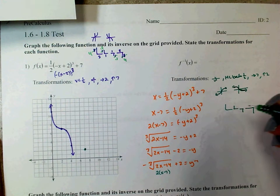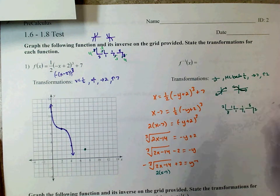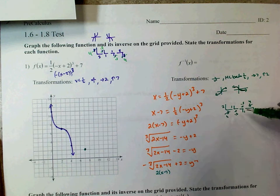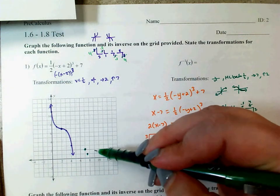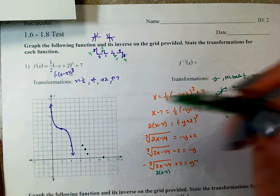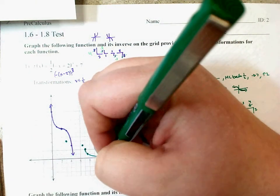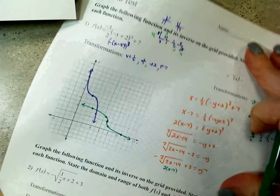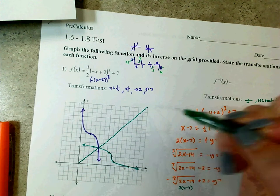Cube root of 1 is 1, cube root of 8 is 2. Horizontal compression by a factor of one half, so values become 0.5 and 4. From the center right 7 up 2: go right 0.5 and down 1, right 4 and down 2, left 0.5 up 1, left 4 up 2. If you draw the diagonal, you should see there's a reflection across it — and they do look like they reflect, so we're good.